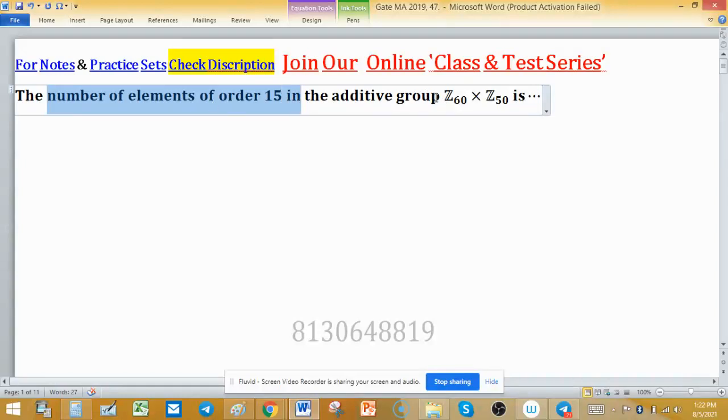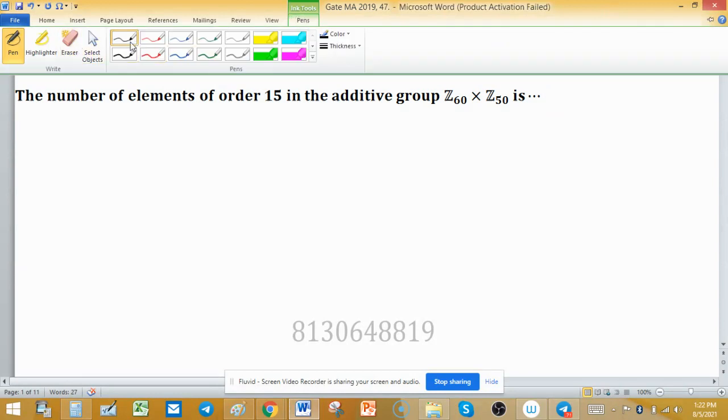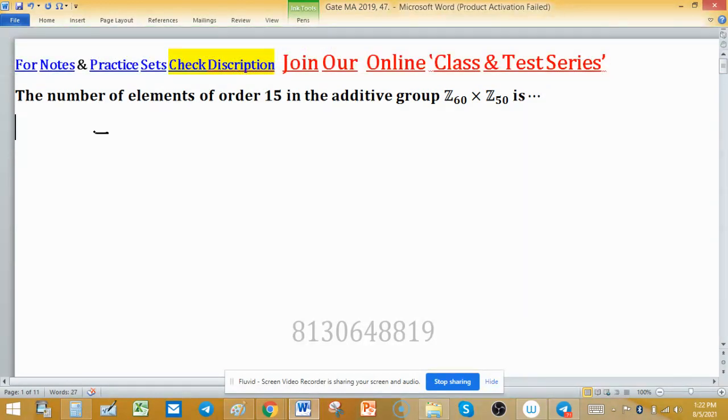To find the number of elements of order 15 in the additive group Z₆₀ × Z₅₀, we need to understand how to find the order of an element in Z_M × Z_N. It can be easily found using the LCM of an element which is coming from Z_M, suppose this is element A, and the order of another element B coming from Z_N.